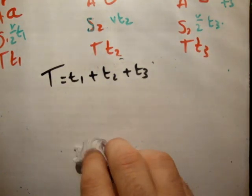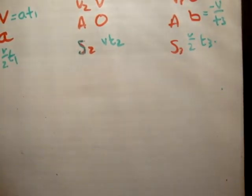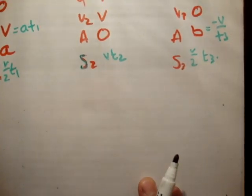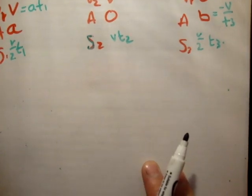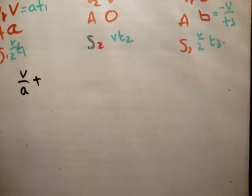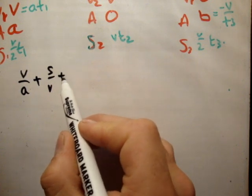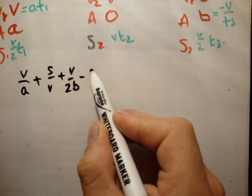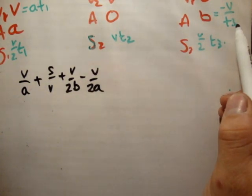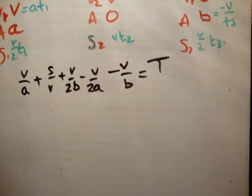We'll say that t capital is equal to t1 plus t2 plus t3. Alright. Once again, I'm running out of space. So, in actual fact, let's rub out this bottom line here. That should give us a bit of space. So, what's t1? You can see that there. So, t1 is equal to v over a, plus t2. Well, t2 is equal to s over v, plus v over 2b, minus v over 2a, plus t3, which is minus v over b, and that's equal to capital T.